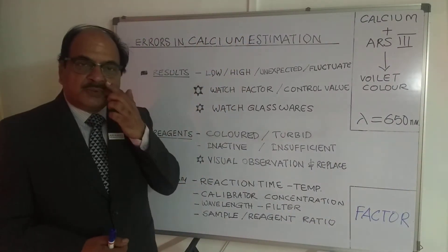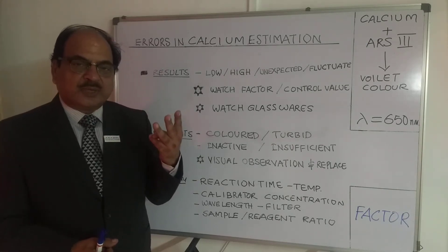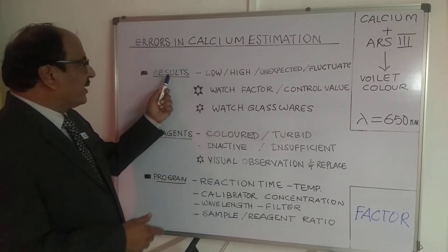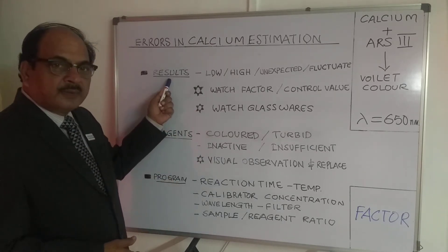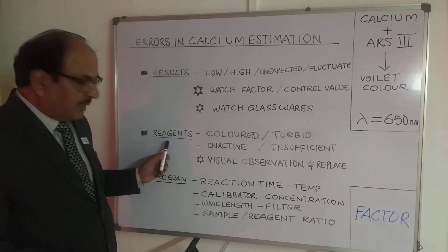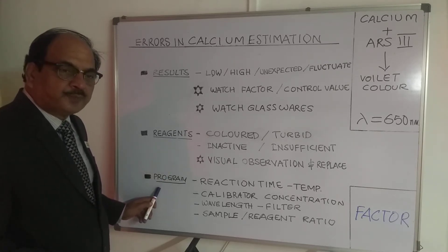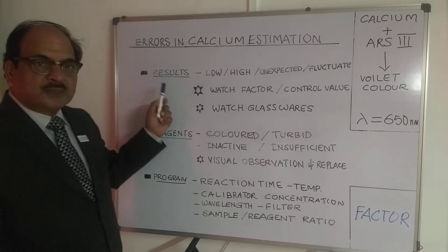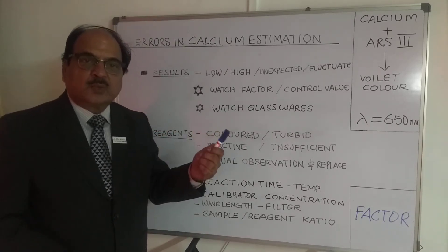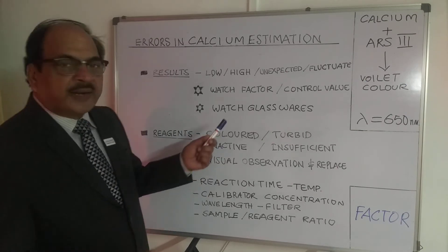Now let's come down to the kinds of results and errors. There are three categories into which all errors fall: the first is result-oriented errors, the second is reagent-related errors, and the third is program-related errors. Let's begin with result-oriented errors.